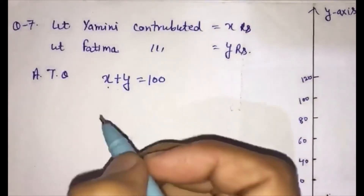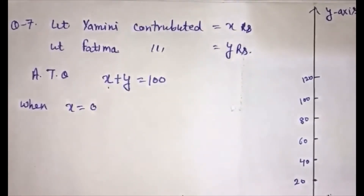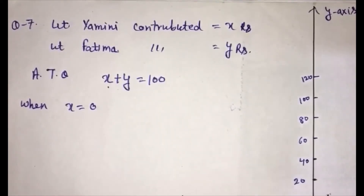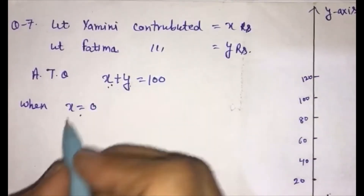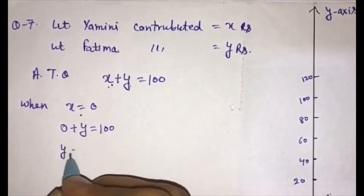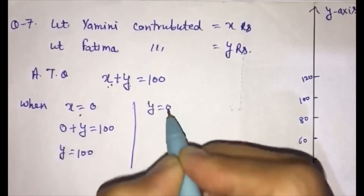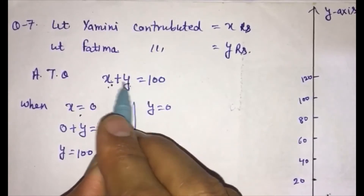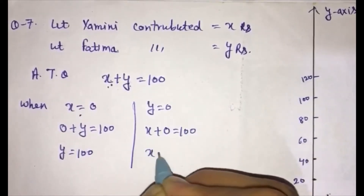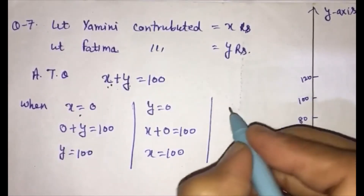Now we will make a table for X and Y. When we put X equal to 0, we get 0 plus Y is equal to 100, meaning Y equals 100. When we put Y equal to 0, we get X plus 0 equal to 100, meaning X equals 100.